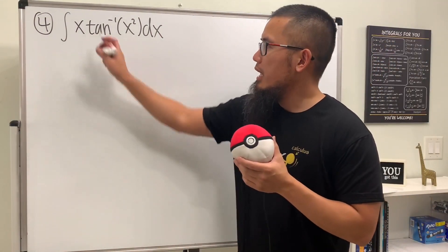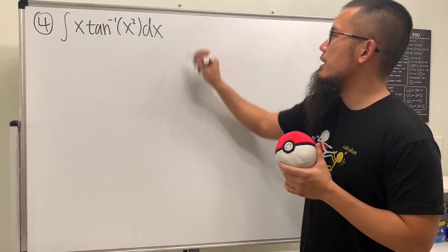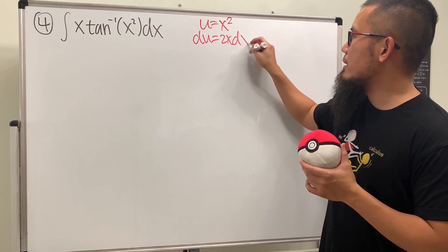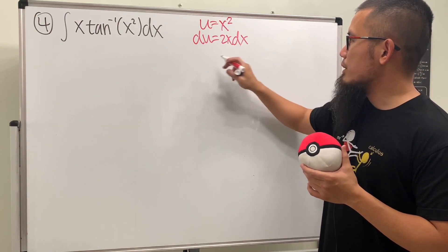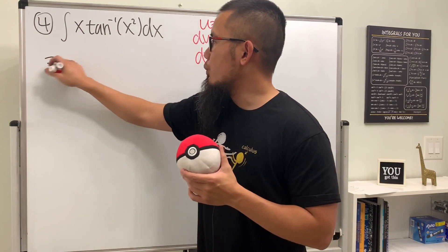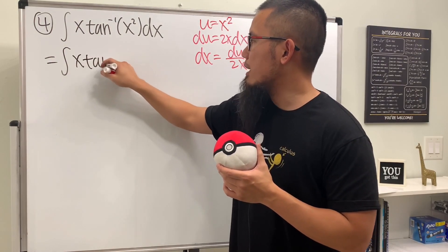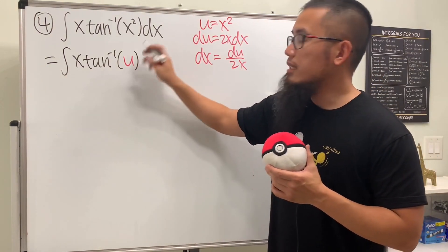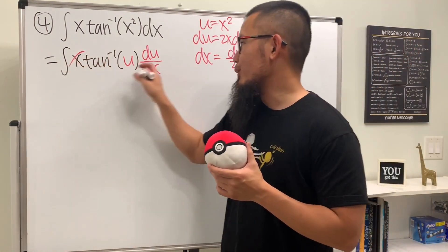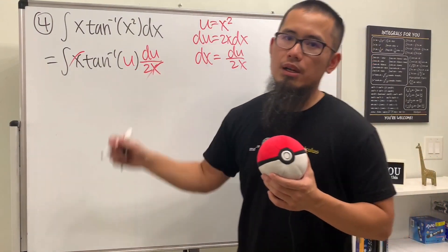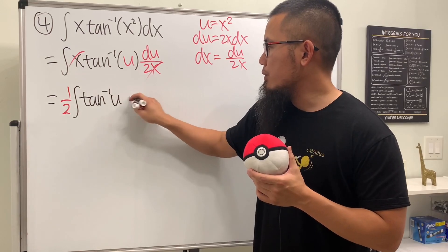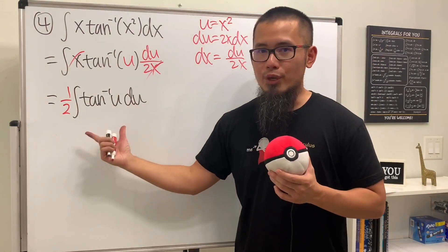For number four, we'll be integrating x times inverse tangent of x squared. We'll do a u-sub first. Let u equal x squared, then differentiate both sides: dx is equal to du over 2x. Take this integral to the u world: we have x times inverse tangent of u, and dx is du over 2x. Cancel the x, and we have the one half factor on the outside. So we have one half times the integral of inverse tangent of u du.